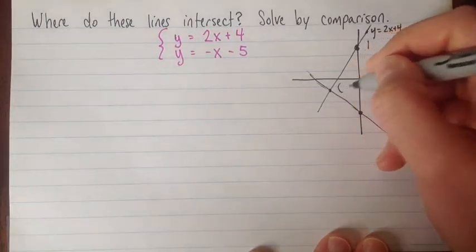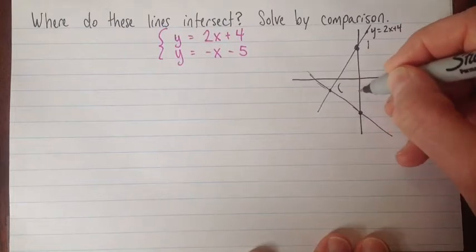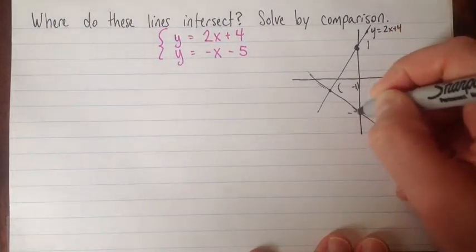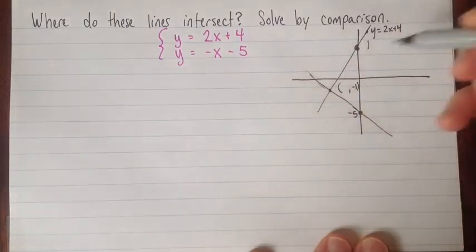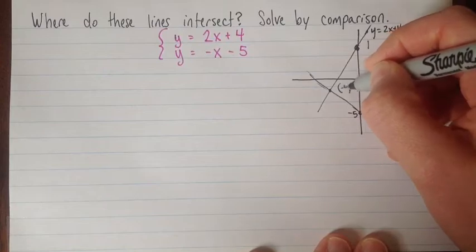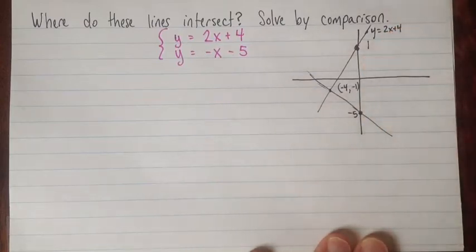Now, my estimate of this, it looks like my y value might be about negative 1. Sorry, this is negative 5, of course. And then my x value might be about negative 4, negative 1. Something like that.